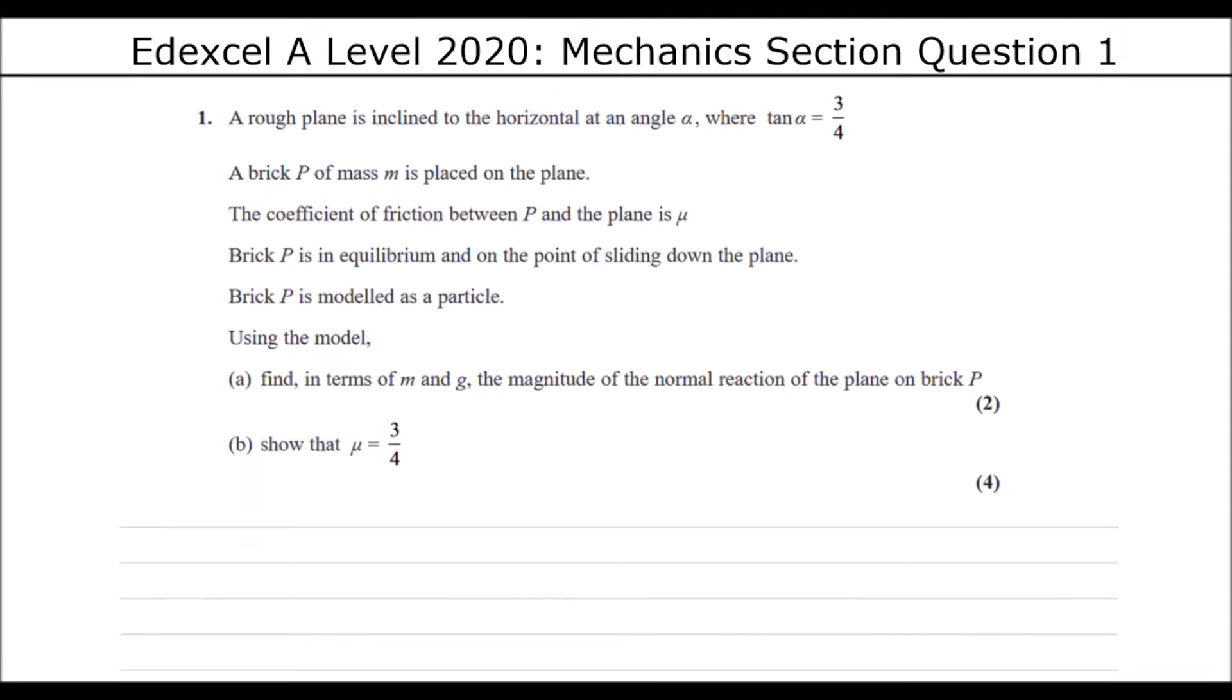A rough plane is inclined to the horizontal at an angle alpha, where tan alpha is 3 quarters. So before we carry on, we can work out what sin alpha and cos alpha are, because that's what we're going to need in this question.